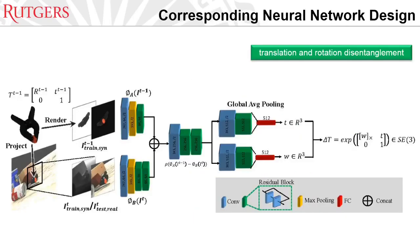Here is the corresponding neural network design. Given an object model, we first render using its previous estimate, giving us the RGB-D data at the previous timestamp. Also, we project using its previous estimate on the newly incoming images and crop the salient region for the current timestamp. The two branches of image data are fed into a Siamese-type network where features are later fused. Near the head of the network, the translation and rotation predictions are disentangled, and the rotation is represented in Lie algebra. Finally, the pose is recovered to the Lie group.